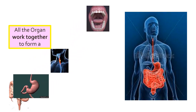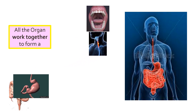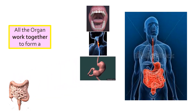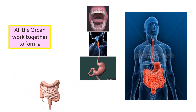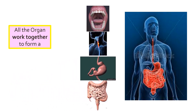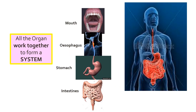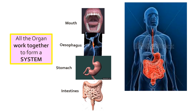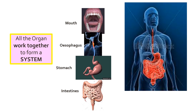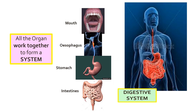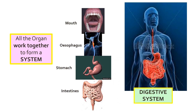All the organs work together to form a system. The combination of all different organs like the mouth, esophagus, stomach, and intestines forms the digestive system.